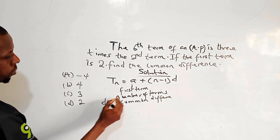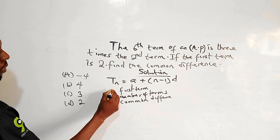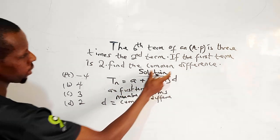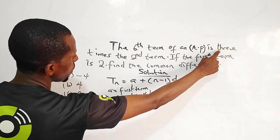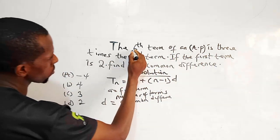So we have our d to be common difference, our n to be number of terms, and our a to be first term. And we look at this question. The question reads, the sixth term of our AP is... So let us figure out the sixth term first.